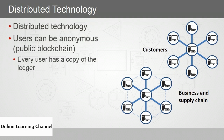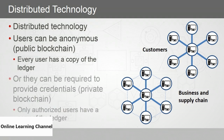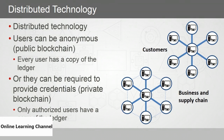It's important to understand that blockchain is distributed technology. Users on a blockchain network can be anonymous in a public blockchain, with everyone having a copy of the ledger. Or, in a private blockchain, users can be required to provide credentials, and only authorized users are allowed to have a copy. You can configure a blockchain network in a number of different ways.